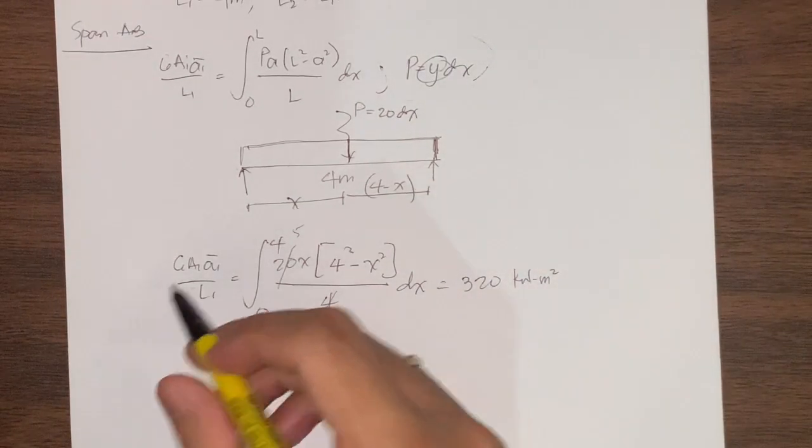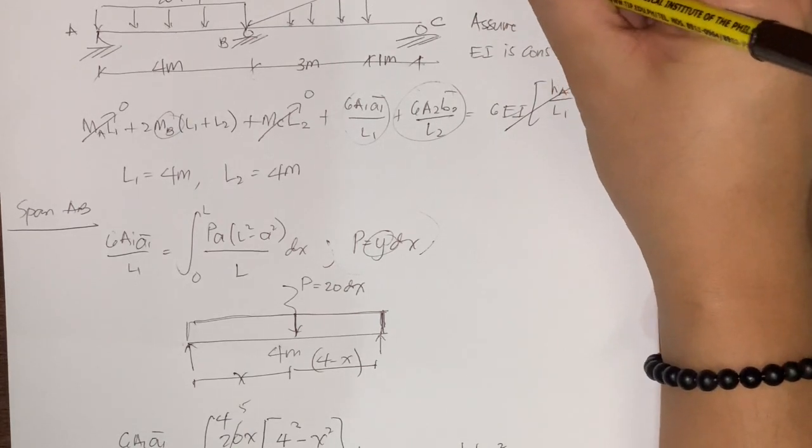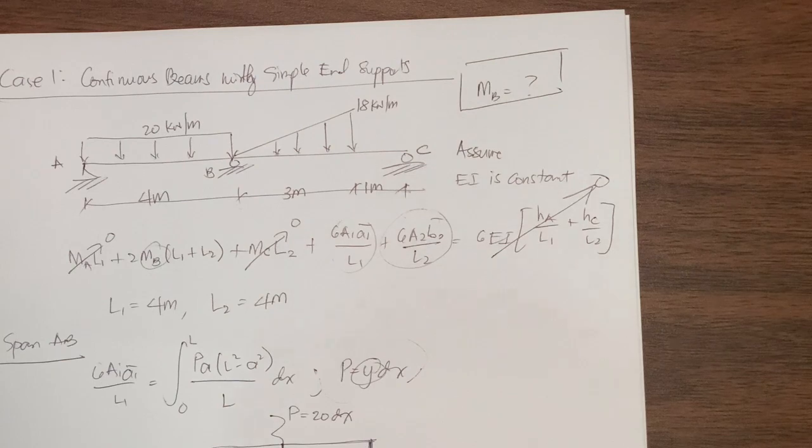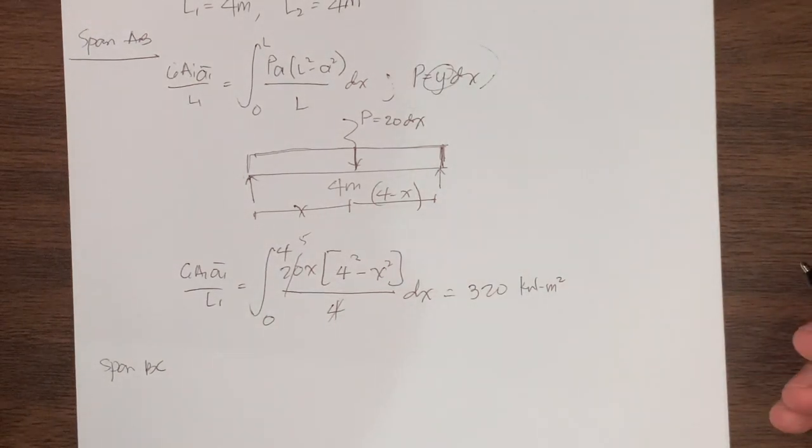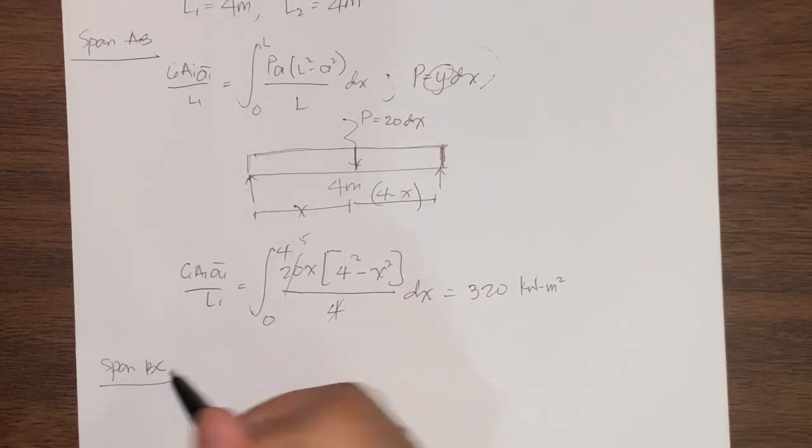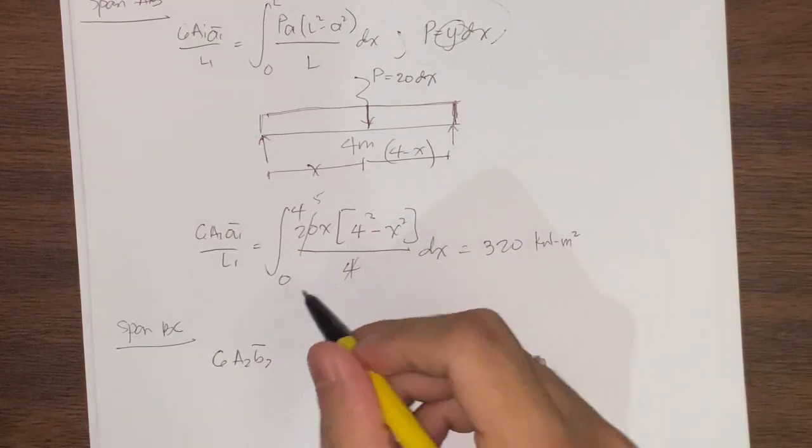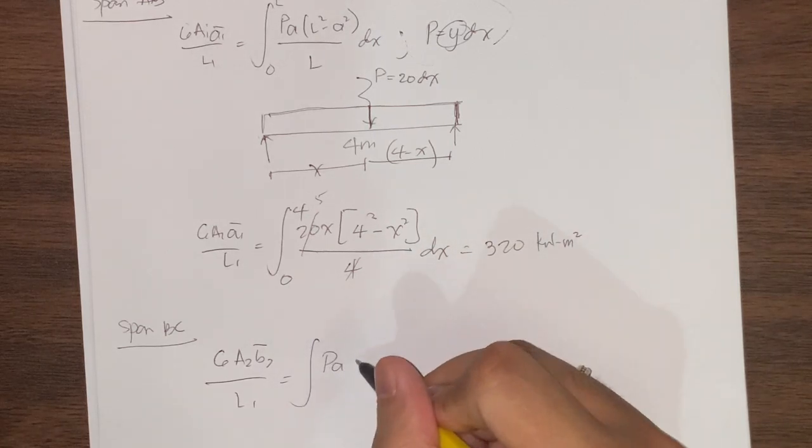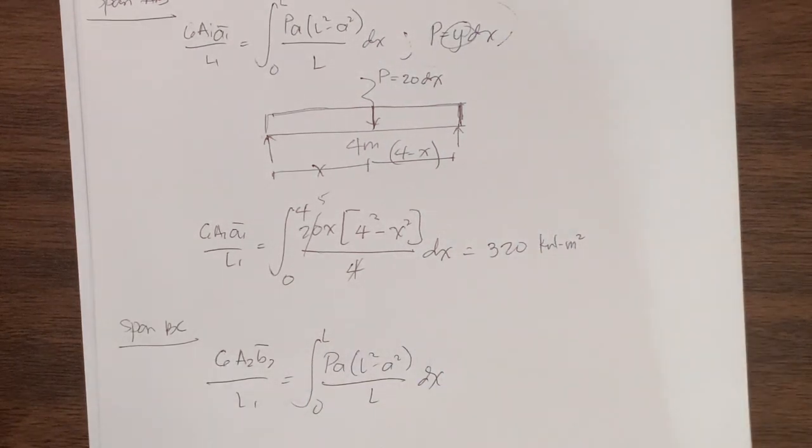Next, how about the other part, span BC? By the way, to simplify, we are looking for moment MB only, because if we look for the reactions, that's easy using statics. So we just need to grasp the concept. We have span BC, let's focus on span BC. We have 6A2B2 bar over L2 equals the integral of the same formula: PA times L squared minus A squared over L, dx from 0 to the length of the load.